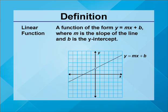In the graph shown, the general form of a linear function y equals mx plus b is shown. m represents the slope of the line, which determines its steepness and orientation, and b is the y-intercept.